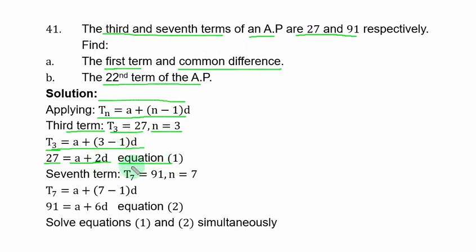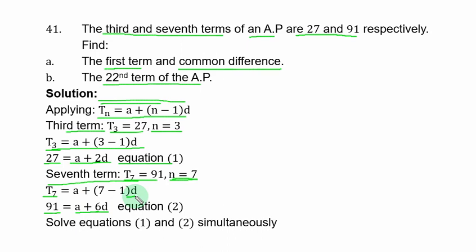For the seventh term, n equals 7, giving: 91 equals a plus 6d — call this equation 2. To proceed, solve equations 1 and 2 simultaneously using any method.